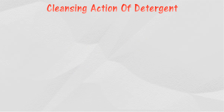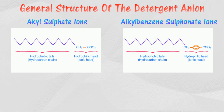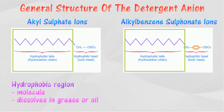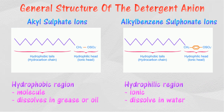The cleansing action of detergent is similar to that of soap. The structure of detergent can be represented in a simplified form: detergent ions consist of a hydrophilic head (ionic part) and hydrophobic tails (hydrocarbon chain). The hydrocarbon tail region, also known as hydrophobic, can dissolve in dirt such as grease.